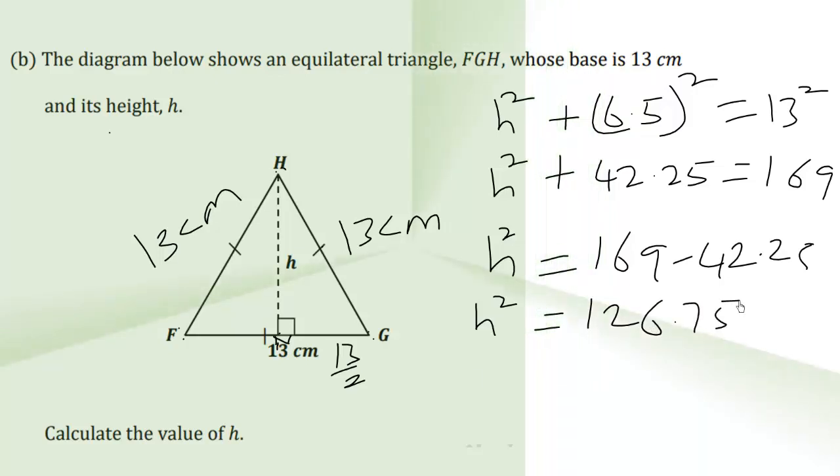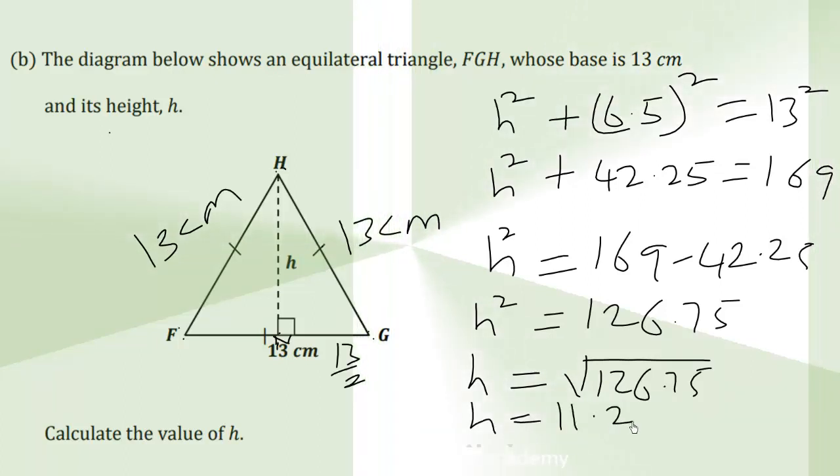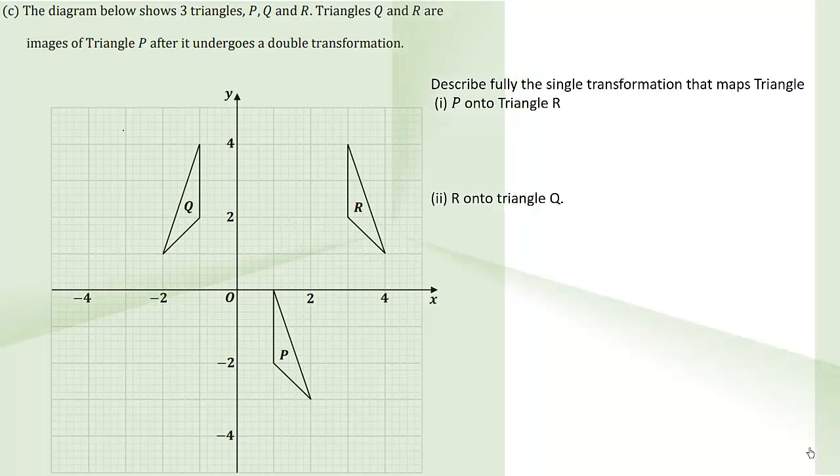The value of h, taking the positive square root of 126.75, gives us 11.26 centimeters. Therefore, h equals 11.26 centimeters. Now let's look at part C of the question.